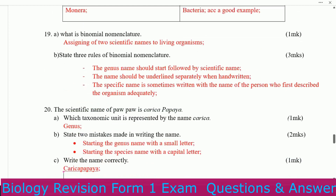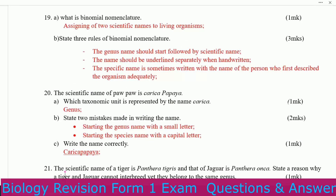What is binomial nomenclature? Binomial nomenclature is the assigning of two scientific names to living organisms. State three rules of binomial nomenclature. The genus name should start with a capital letter followed by the species name. These questions keep repeating — that is why there is no reason for a student to fail; they appear in many KCSE exams. The name should be underlined separately when handwritten. The scientific name is sometimes written with the name of the person who first described the organism.